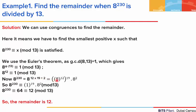We split it up as 8 to the power 12, raised to the power 19, multiplied by 8 to the power 2. From Euler's theorem, 8 to the power 12 is congruent to 1 mod 13. So this whole term reduces to 1 multiplied by 8 squared, which is 64. And 64 is congruent to 12 mod 13, so the remainder is 12.